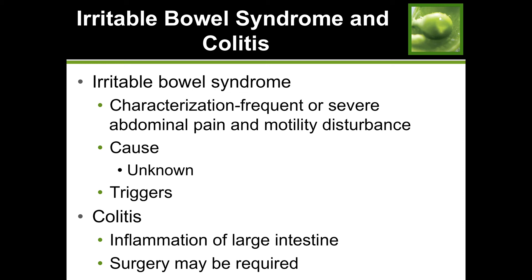Irritable bowel syndrome (IBS) is characterized by frequent or severe abdominal pain and motility disturbance. The cause is really unknown, but most people with IBS know their triggers - such as certain foods like tomatoes, stress, or smoking. Colitis: the suffix -itis means inflammation, and 'col' refers to colon - so it's inflammation of the large intestine. Surgery may be required if it's severe enough.